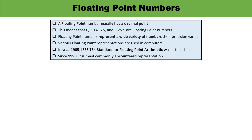First, you must remember about floating point and its properties. It is a number which usually has a decimal point. For example, 3.5, minus 100.5, minus 125.5 — these are floating point numbers because they have a decimal point, and they are widely used. Computers mainly use floating point representations.